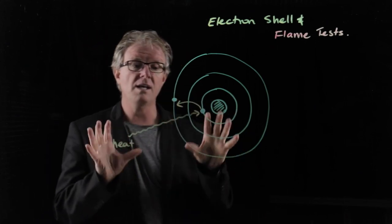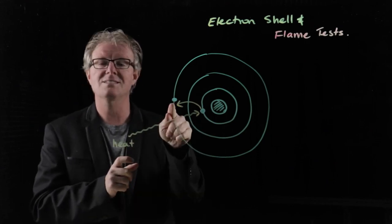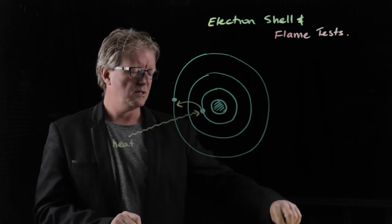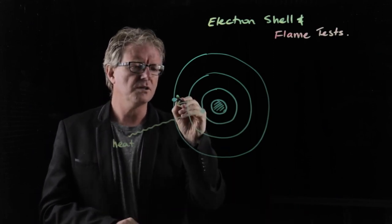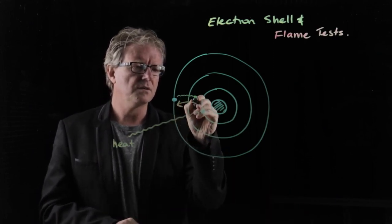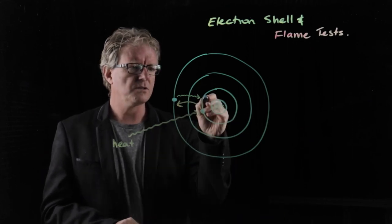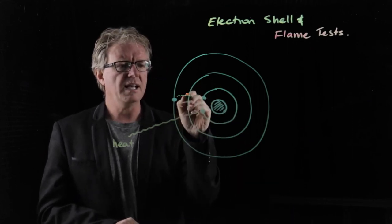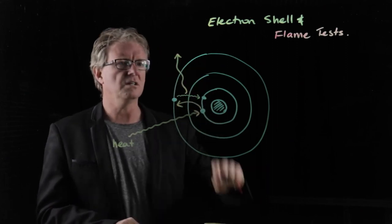Now, that can only happen temporarily because it's unstable. It's not supposed to be there. So what happens is when that electron comes back down, back to where it's supposed to be, the energy that it was gained is lost as light energy.